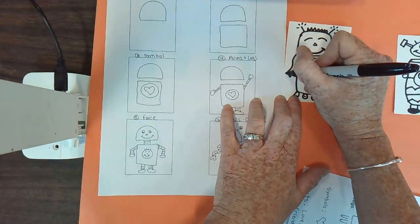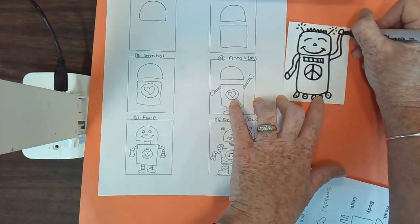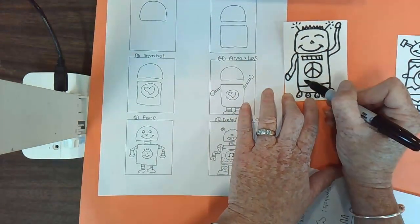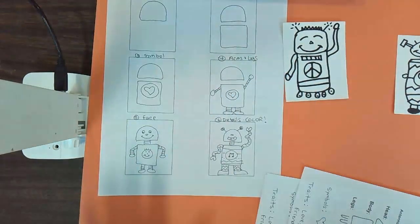You could add hands. And then you can add some details, some patterns on the base of your robot. It's totally up to you.